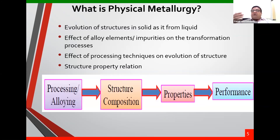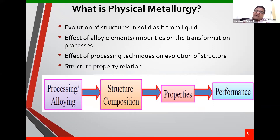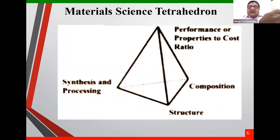Physical metallurgy is more relevant to our day-to-day work. Hence, the focus will be on physical metallurgy for today and tomorrow. We will not be talking about chemical metallurgy. We will be talking about physical metallurgy — the structure-property relationship, how strength is related to microstructure. To understand material performance, we need to understand what is called the materials science tetrahedron. This is a very, very important term. Let us make it very simple to understand.